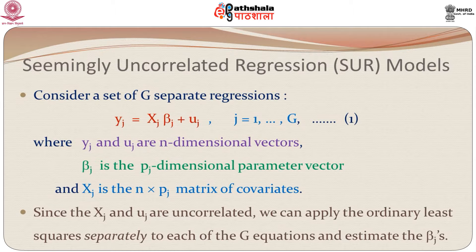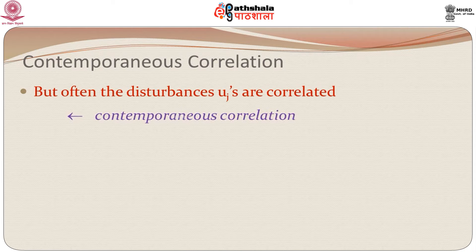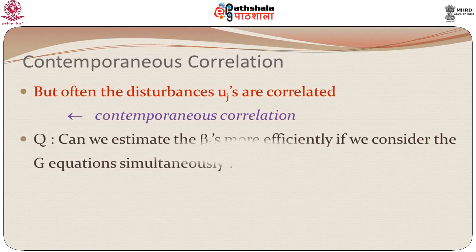But in the case of economic problems, we very often have some relationship between the disturbances. So we say that the disturbances e_j's are correlated. We call this contemporaneous correlation. And the question arises: can we estimate the beta_j's more efficiently if we consider the g equations simultaneously rather than looking at them separately?